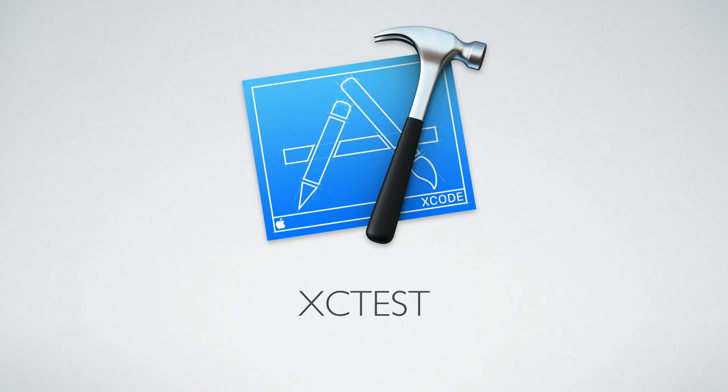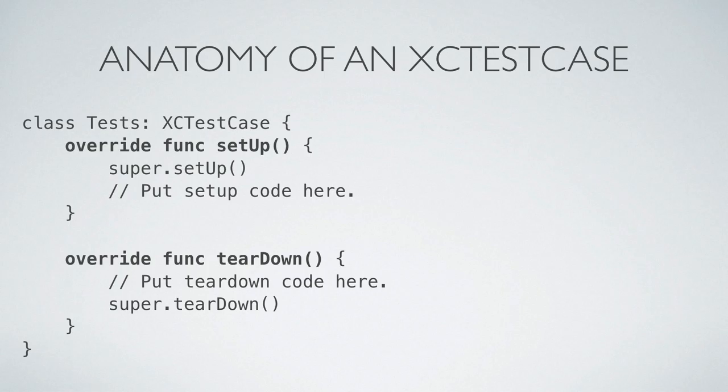To begin testing, we'll want to create a subclass of XCTestCase. Before each test in the XCTestCase is run, the setup method is called, and when that test finishes, the teardown method is called. This gives us an opportunity to set up the necessary state before testing and an opportunity to clean up afterwards — things like setting up a core data stack, configuring mock data, whatever state we might need before each individual test executes.